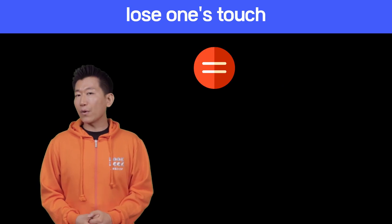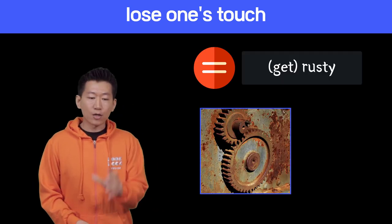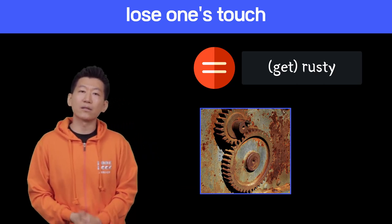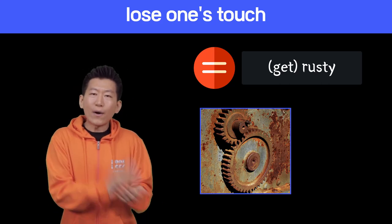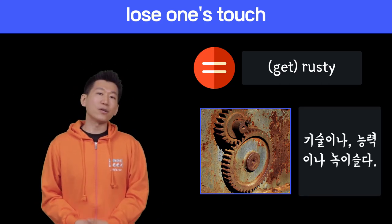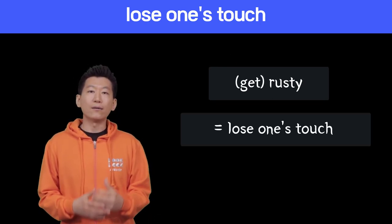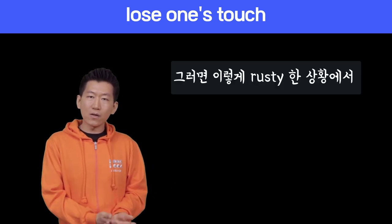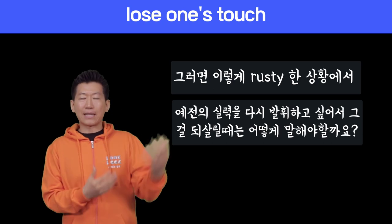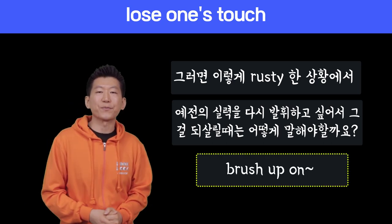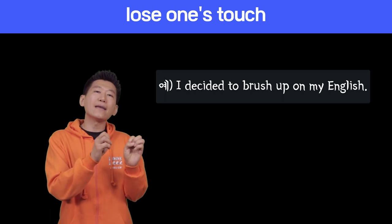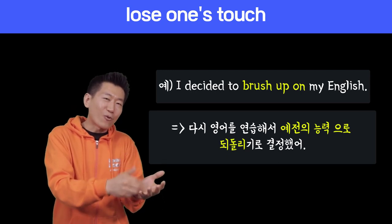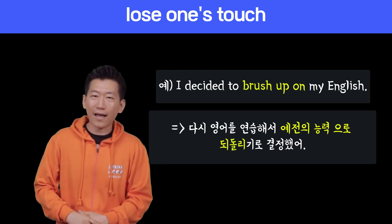비슷한 표현으로 'rusty'라는 표현이 있습니다. Rusty라는 것은 녹을 말하는 거거든요 — 이걸 그냥 냅두면 녹이 슬잖아요. 마찬가지로 어떠한 능력이나 기술 같은 경우도 사용 안 하면 녹이 슬게 돼 있습니다. Rusty와 lose one's touch는 동의어가 되겠죠? 또, 실력을 다시 끌어올리고 싶다면 'brush up on'이라는 표현을 쓸 수 있습니다. 'I decided to brush up on my English' — 영어를 다시 공부해서 더 잘하게 만들기로 했다라는 표현이 되겠습니다.